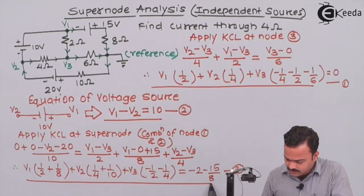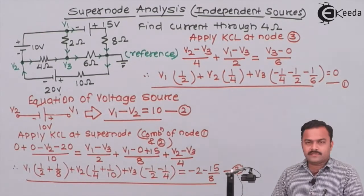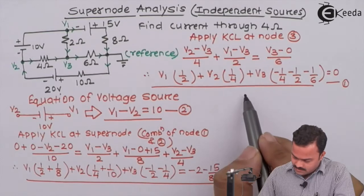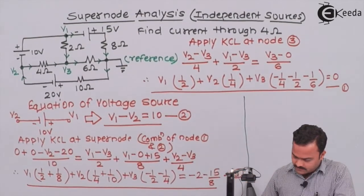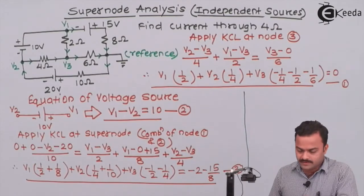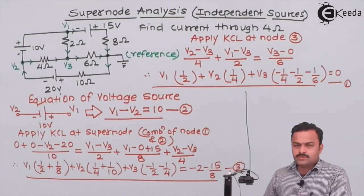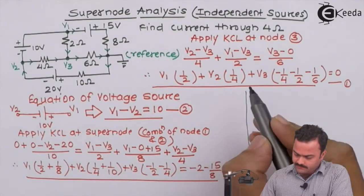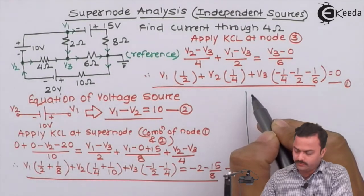So this we need to do with utmost care. Ultimately what we get: equations are three in number, and the variables are also three in number. So after solving, we will get the values of node voltages V1, V2, and V3.